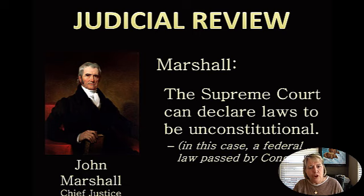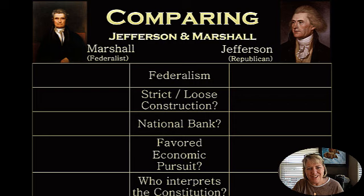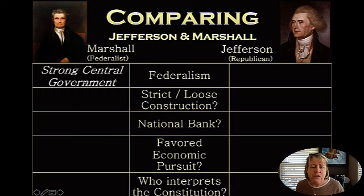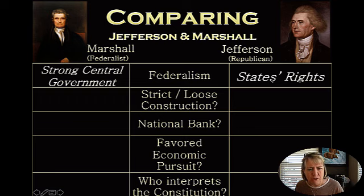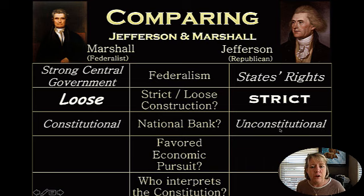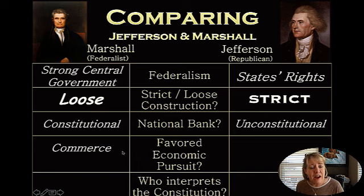This idea of judicial review started us on the path where the Supreme Court can declare laws unconstitutional — in this case, a law passed by Congress. What's interesting is that even though Marshall ruled in favor of the Jefferson administration in Marbury v. Madison, he's still a Federalist. Just as a reminder: Federalists believe in a strong central government versus strong state governments for Republicans. Federalists believe in a loose interpretation of the Constitution, whereas Republicans believe in a strict interpretation. The National Bank would be supported by the Constitution as far as Federalists are concerned, but not Republicans. Federalists supported commerce and the urban lifestyle, whereas Republicans supported agriculture and the agrarian lifestyle.